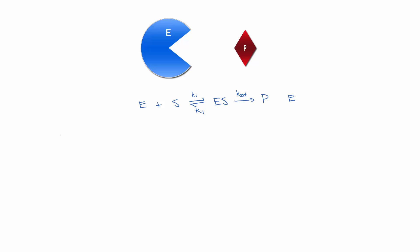Overall, the rate of this enzyme-catalyzed reaction is equal to the production of products over time — dP/dt — and that is equal to the rate of the step in which the products are produced. That's equal to Kcat times the concentration of the enzyme-substrate complex.